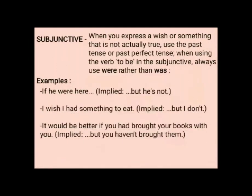The last mood is subjunctive. When you express a wish or something that is not actually true, use the past tense or past perfect tense when using the verb. To use 'to be' in the subjunctive, always use 'were' rather than 'was.' Examples: 'If he were here' — but he's not. 'I wish I had something to eat' — but I don't. 'It would be better if you had brought your books with you' — but you haven't brought them.